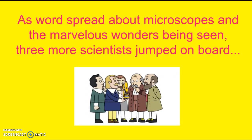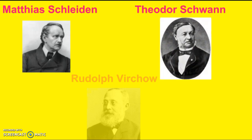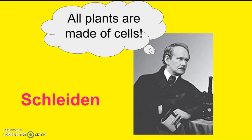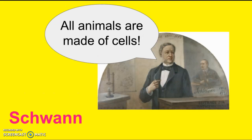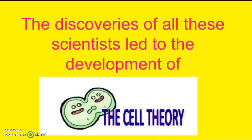As word spread about microscopes and the marvelous wonders being seen, three more scientists jumped on board: Matthias Schleiden, Theodore Schwann, and Rudolf Virchow. Schleiden was responsible for saying all plants are made of cells. Schwann was responsible for saying that all animals are made of cells. And Virchow said that cells divide to form new cells. All of these discoveries by these scientists led to the development of what we now know as the cell theory.